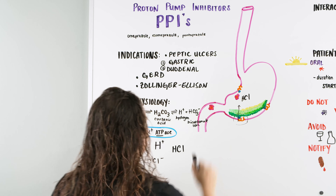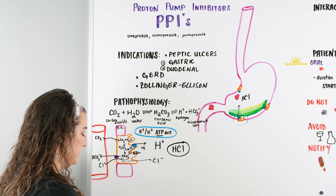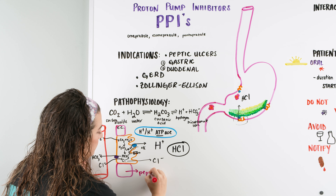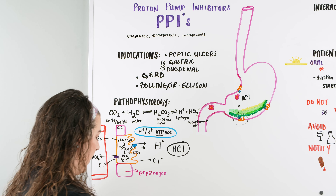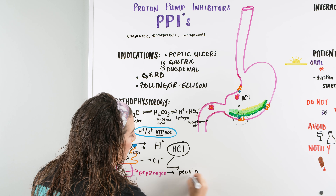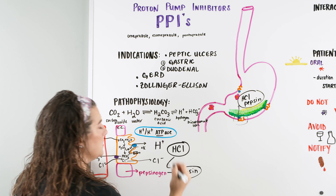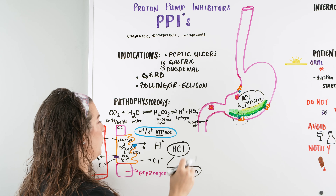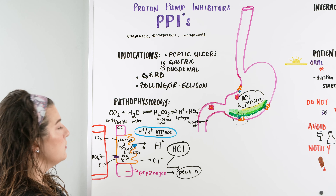Now with HCl and pepsin together, we are able to digest. These are our gastric juices — the mechanisms we use to digest and denature proteins, break down food into viable molecules that we can absorb and use. So why is all this important? If a person takes a PPI, it starts to block or inhibit this proton pump, so the pump cannot work as effectively as it normally would.